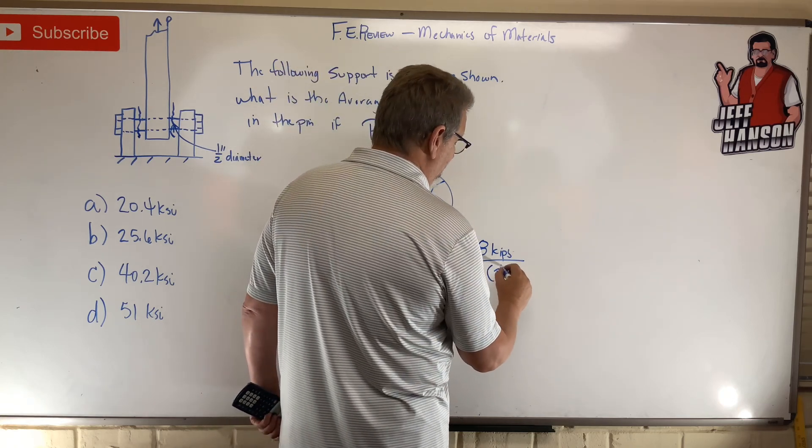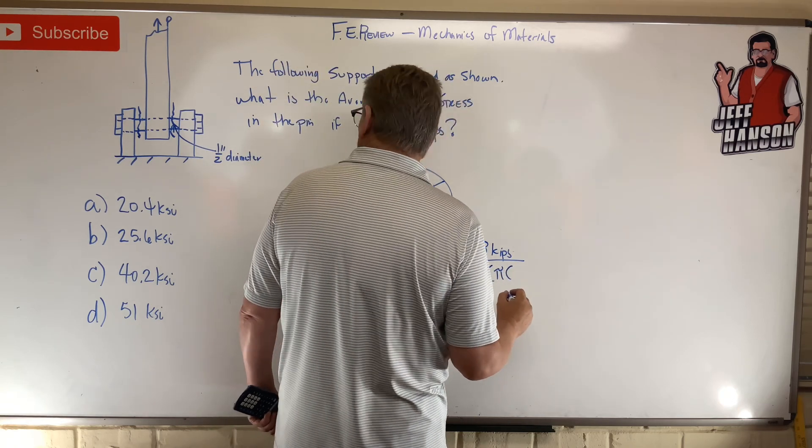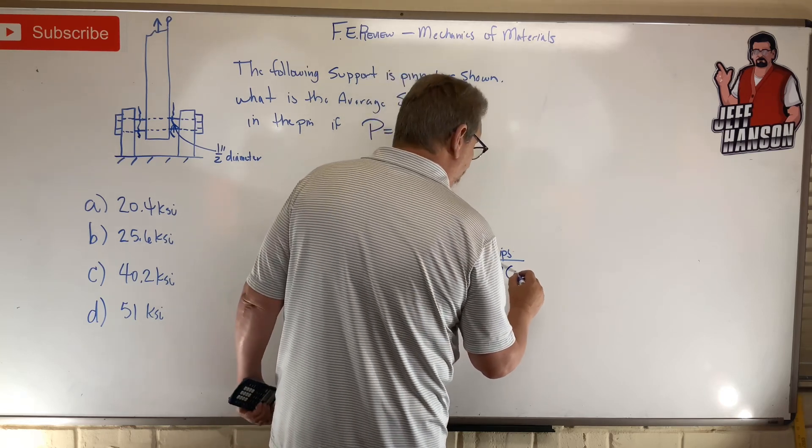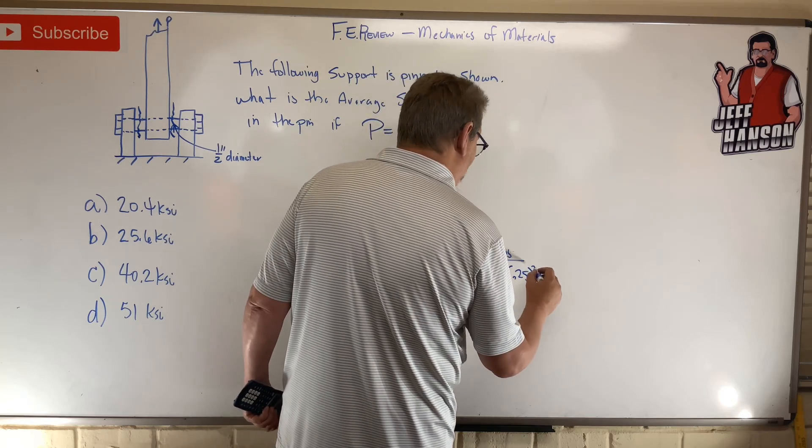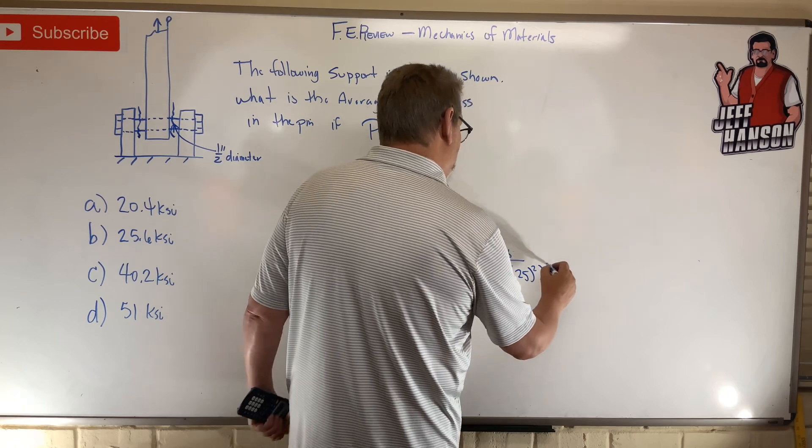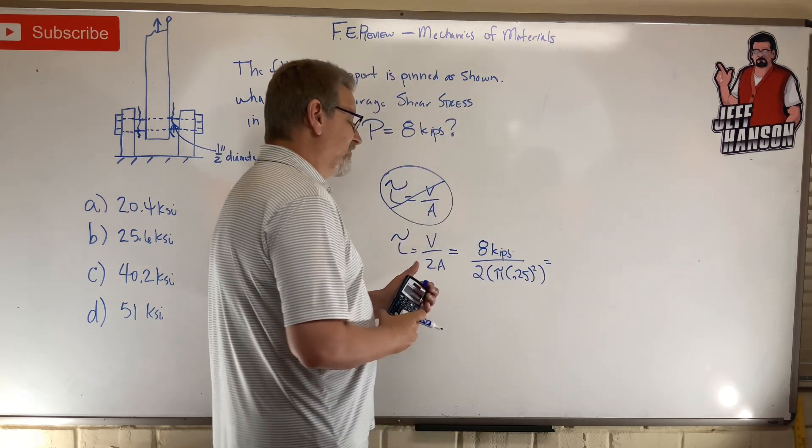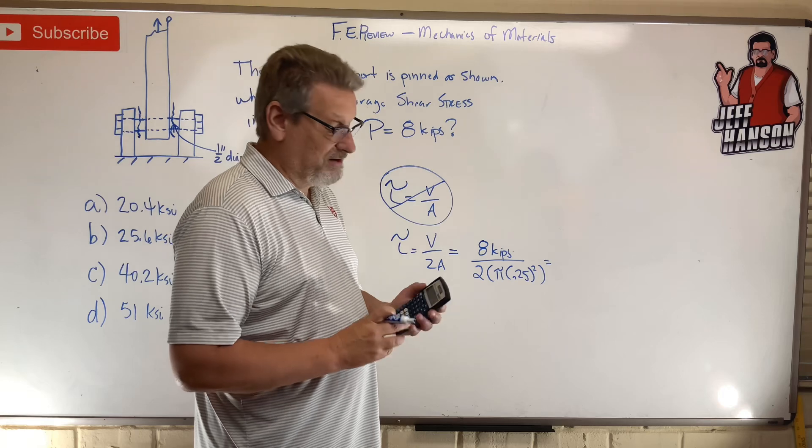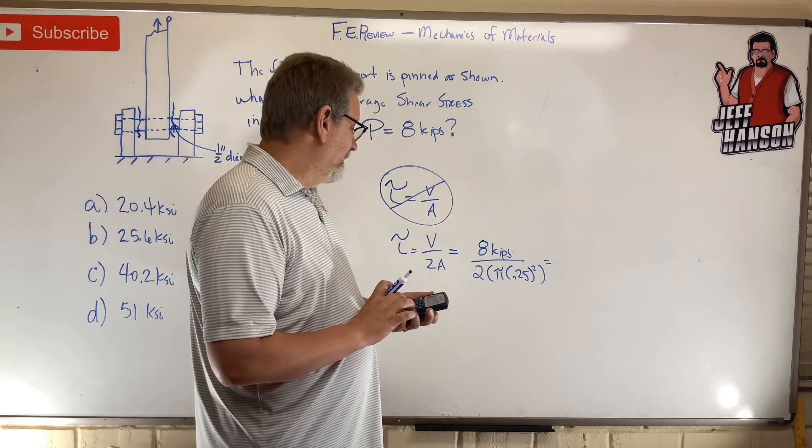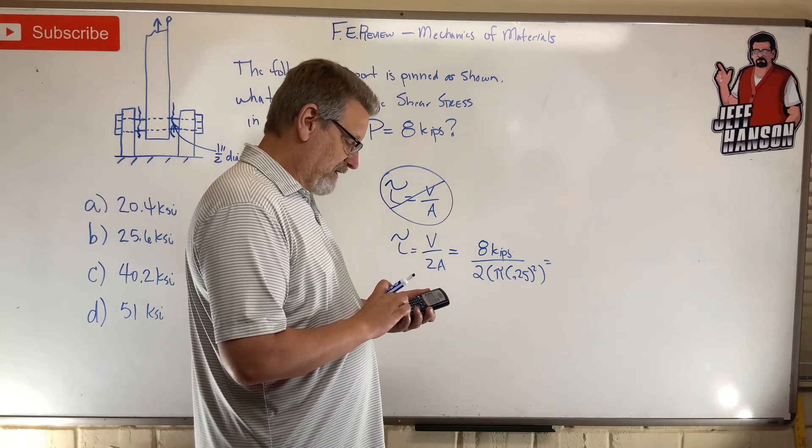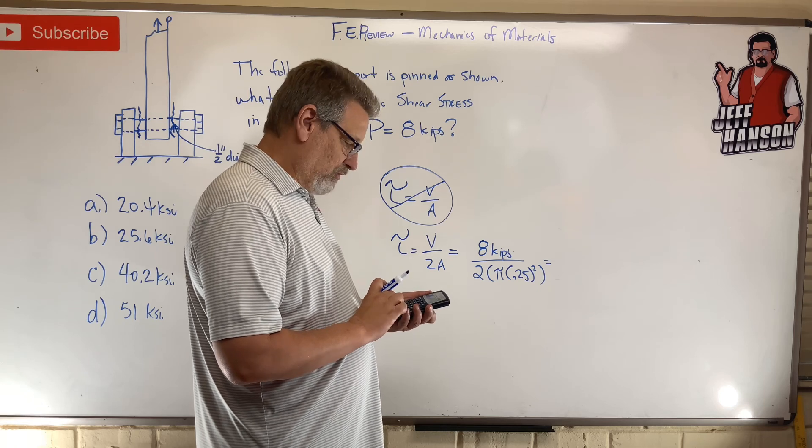...going to be what? Pi times r squared. That's a half-inch diameter, so 0.25 squared. Okay, and that's going to give me an answer in kips over inches squared, ksi. So 8 divided by 2, I just put that in my calculator, divided by pi, equals, and then divided by 0.25 squared, equals...